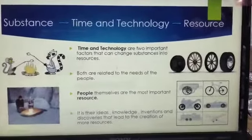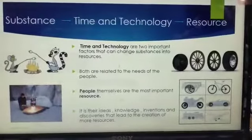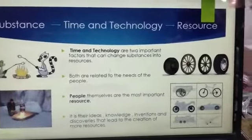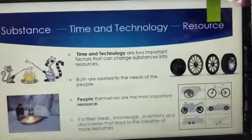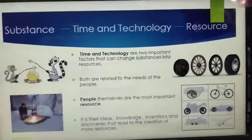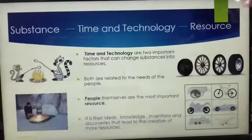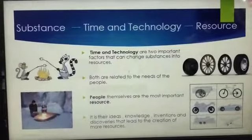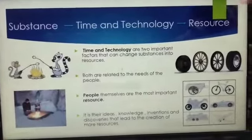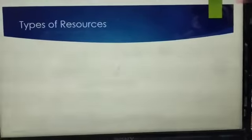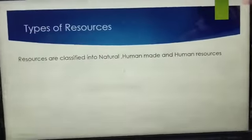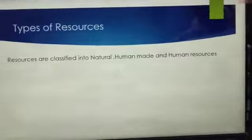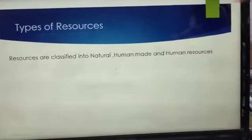Both are related to the needs of people, and people themselves are a very important resource. It is their ideas, knowledge, inventions and discoveries that led to the creation of more resources. When we first discovered fire we did not fully understand its uses, but slowly and gradually we came to understand it is very useful. Similarly, when the wheel was invented it was in a different shape, but now it is used in various means of transportation. Now we are moving to the types of resources.